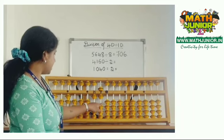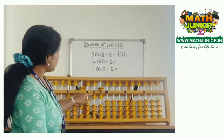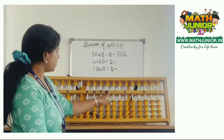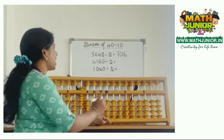So next number is 16. 2 times 8 is 16. Remove 16. Then I'm left with 0. So 2 times 0 is 0. My final answer is 2,080.